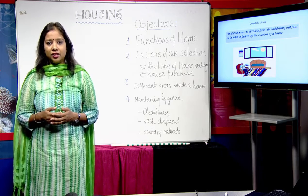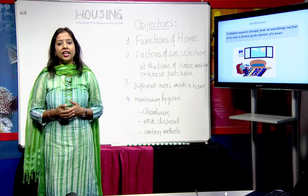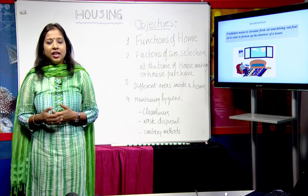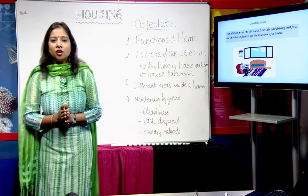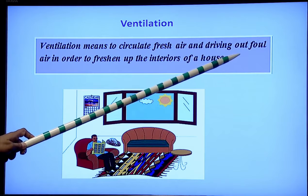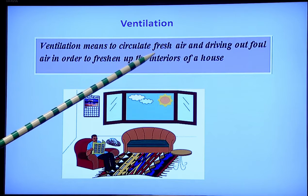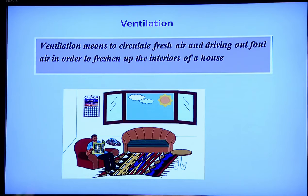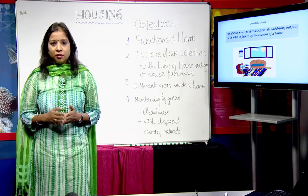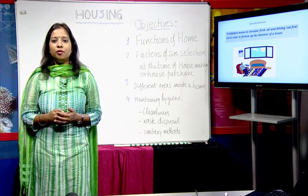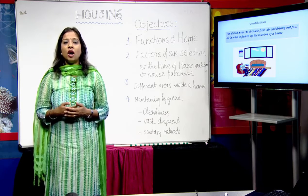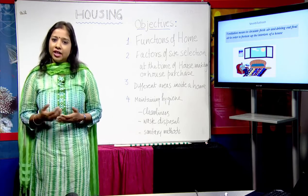Ventilation is provided either through windows — known as natural ventilation — or through artificial means such as exhaust fans, fans, ACs, or coolers. Ventilation helps remove foul air from inside the house and circulate fresh air from outside to freshen up the interiors. Ventilation has two roles: bringing fresh air from outside into the room with the help of fans or windows, and removing foul smells or foul air from inside with the help of an exhaust fan.